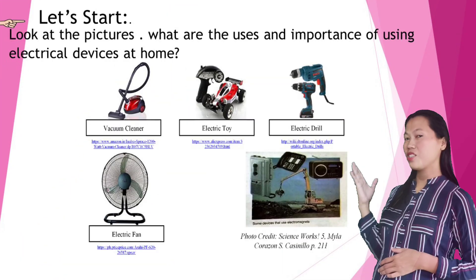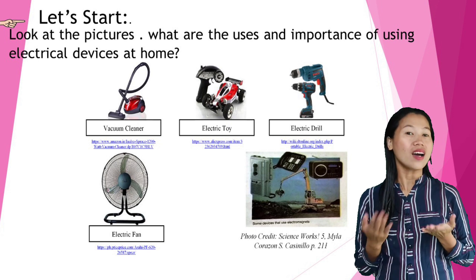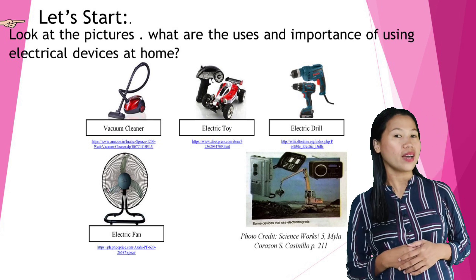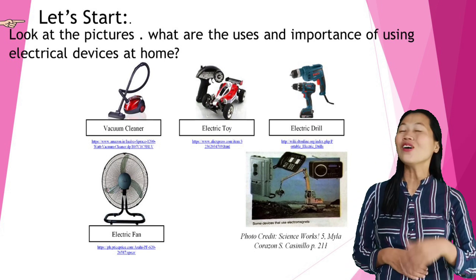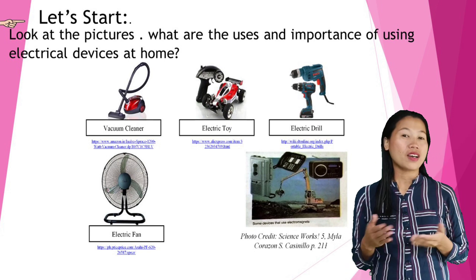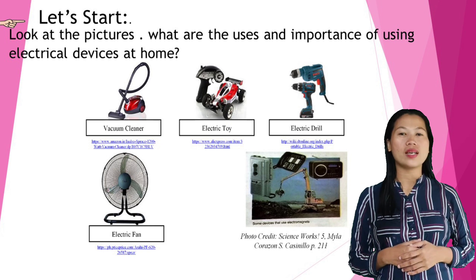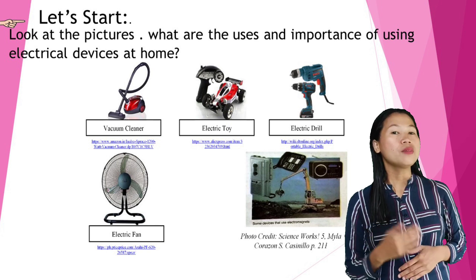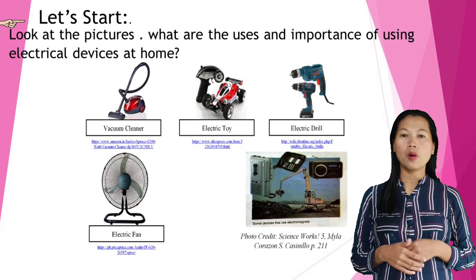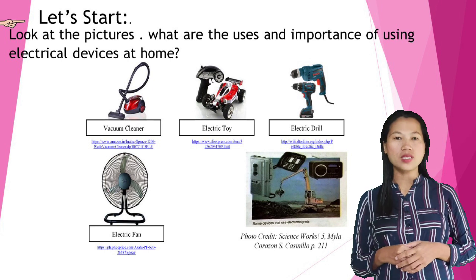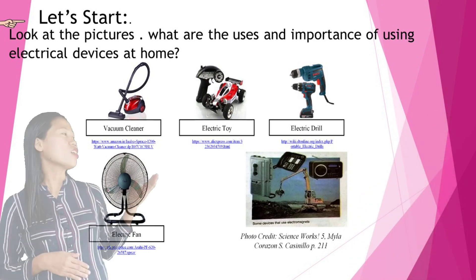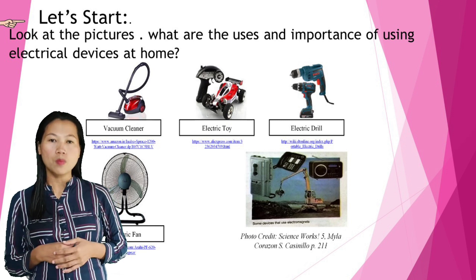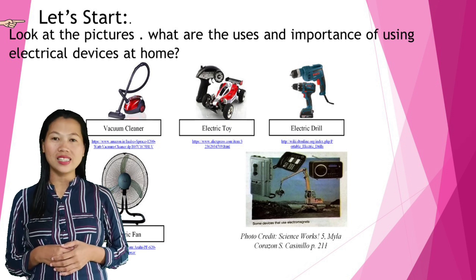Look at the pictures! What are the uses and importance of using electrical devices at home? A vacuum cleaner, also known as a vacuum or a hoover, is a device that removes debris from floors, upholstery, draperies and other surfaces. The debris is collected by either a dust bag or a cyclone for later disposal.